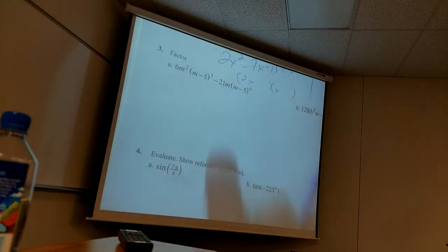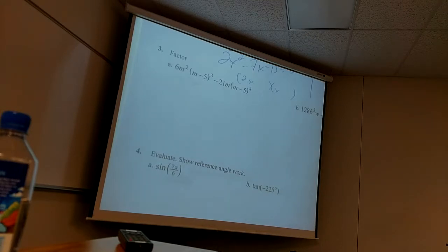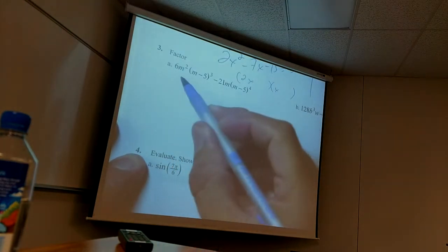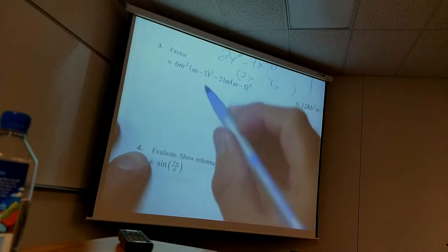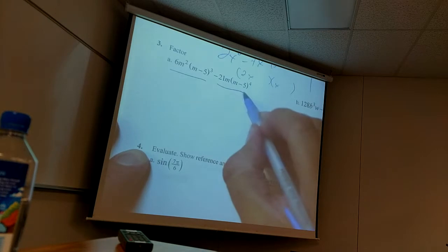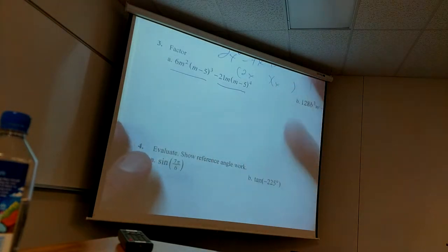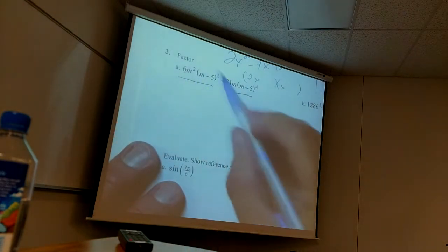The thing that kills students in calculus — and in business calculus — is not being able to factor. This problem will appear in our calculus work. For this expression, how many terms are there? Two, because terms are separated by pluses and minuses. So we look for the GCF — what number do they both have? Three. How many m's do they both have? One. How many (m − 5)'s do they both have? Three. Factor those out and write what's left.